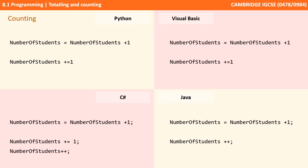Counting is a little different in each language. We can see here there are multiple ways of doing it within a given language — there's a way which we could argue reads better but is slightly less efficient in terms of coding. So in Python we've got: number of students equals number of students plus one. A very similar thing can be seen in Visual Basic, C-sharp, and Java.